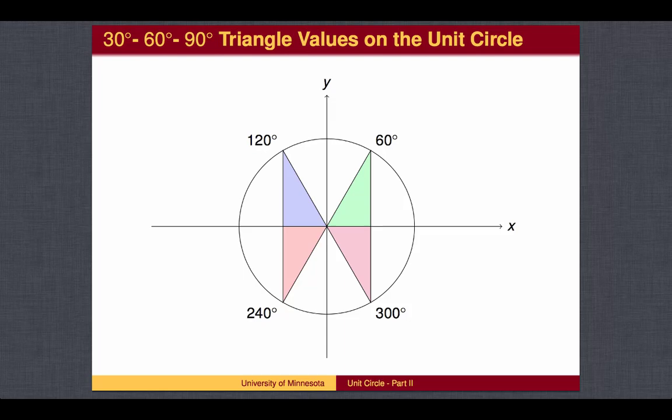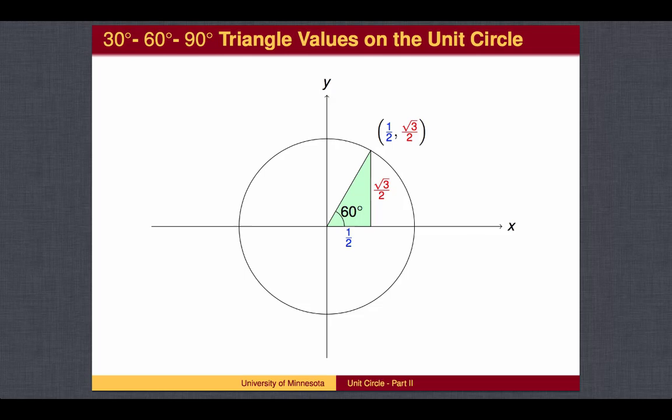We can also put the short side on the x-axis to find sine and cosine values for 60, 120, 240, and 300 degrees. In the first quadrant, the angle at the origin is 60 degrees, so the cosine of 60 degrees is 1 half, and the sine of 60 degrees is the square root of 3 over 2.